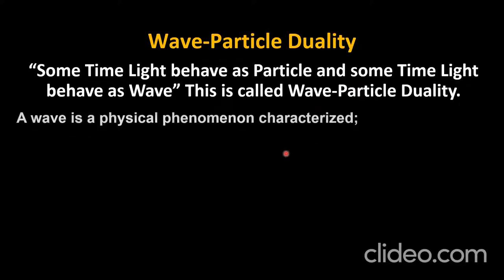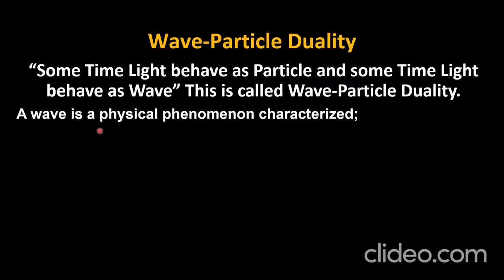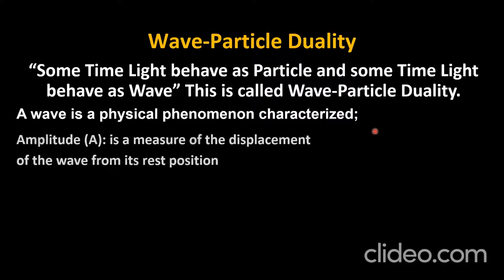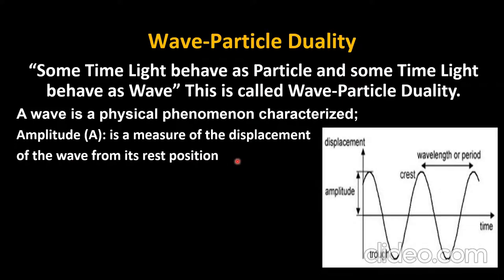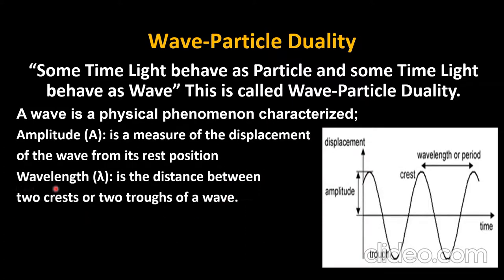A wave is a physical phenomenon characterized by amplitude. Amplitude is the measure of the displacement of the wave from its rest position. As you can see in this figure, the distance from the mean position or rest position to the peak is called amplitude. The second important parameter of a wave is wavelength — the distance between two crests or troughs of the wave.